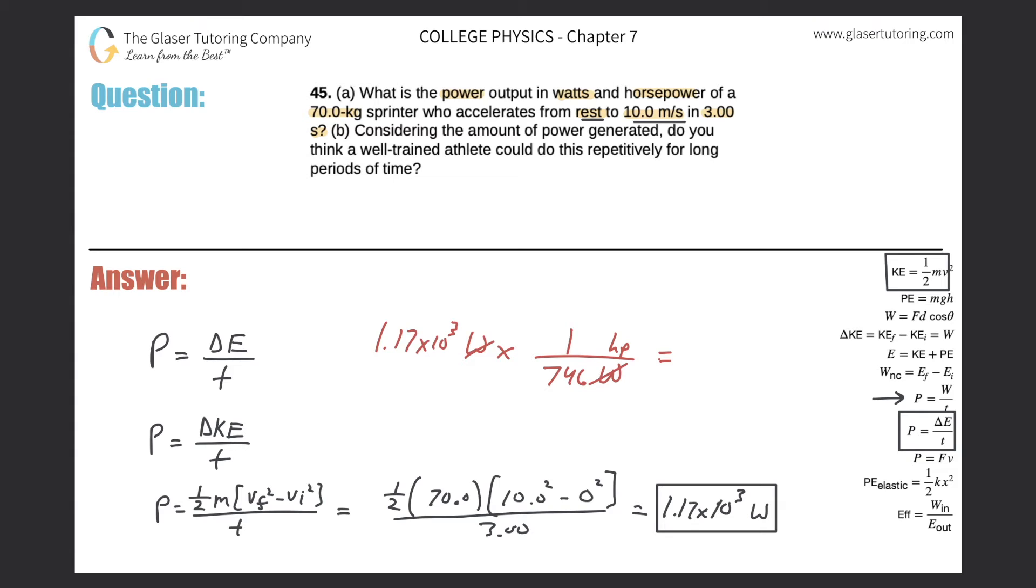Now we are left with our answer. So 1.17 times 10 to the third divided by 746, and we get about 1.57 horsepower. So that would be the answer in horsepower. So we got our two answers.